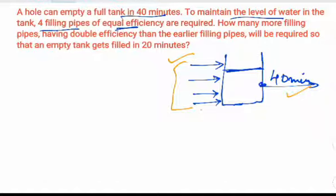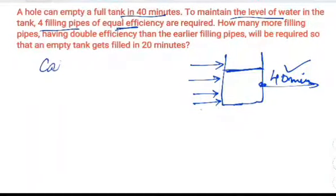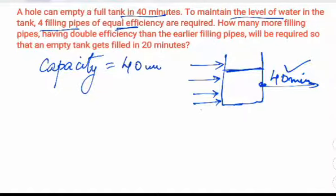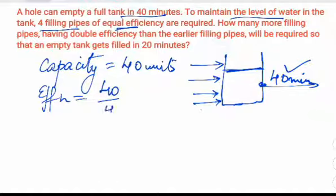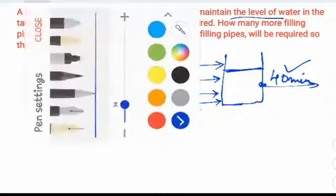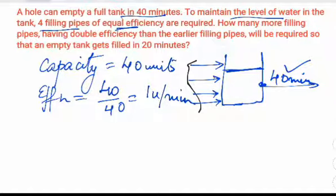Now let us calculate the efficiency. The hole drains the tank in 40 minutes, so let us assume the capacity of the tank as 40 units. The efficiency of the hole becomes 40 divided by 40, that is 1 unit per minute draining out. Since the four filling pipes together maintain the level, their combined efficiency equals the hole's efficiency of 1 unit per minute.